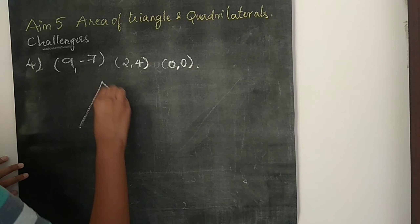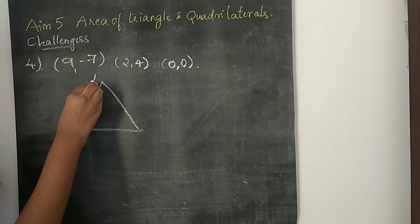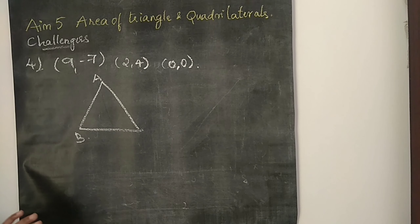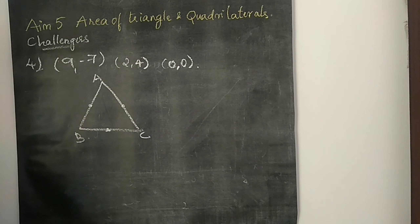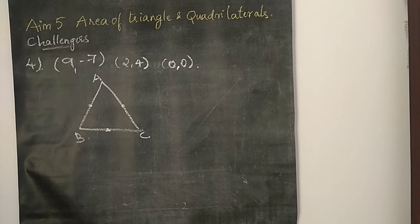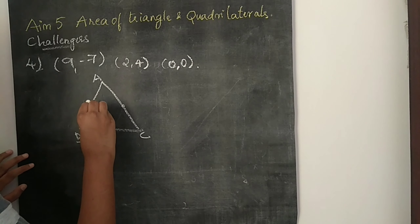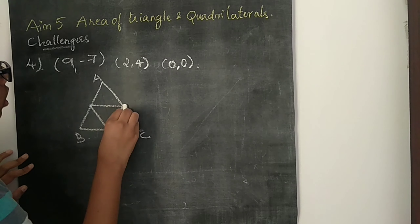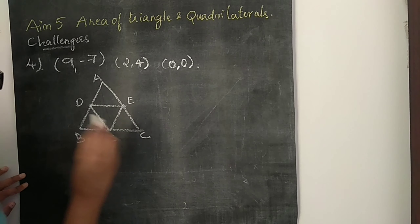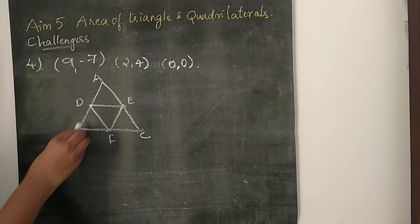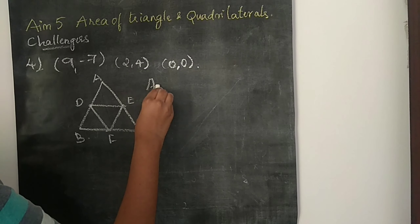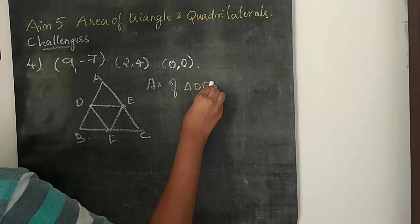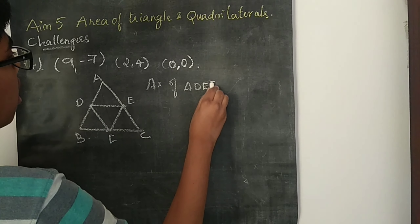Now the fourth question: they have given three points which are the midpoints of the sides of triangle ABC — midpoints of AB, BC, and CA. Let's call these midpoints D, E, F. Joining them forms triangle DEF inside the big triangle. They have given us these midpoint coordinates, and we have to find the area of triangle DEF and then the area of triangle ABC.